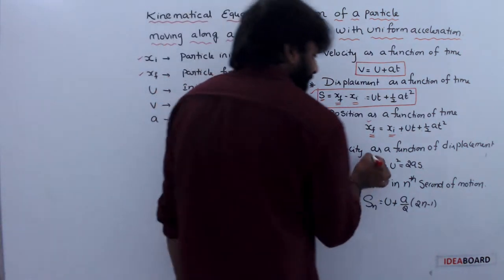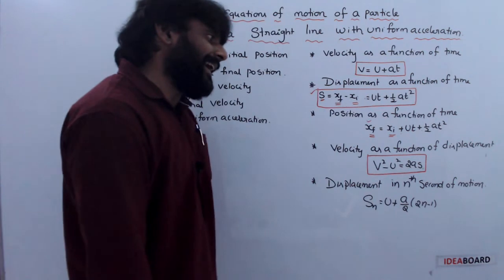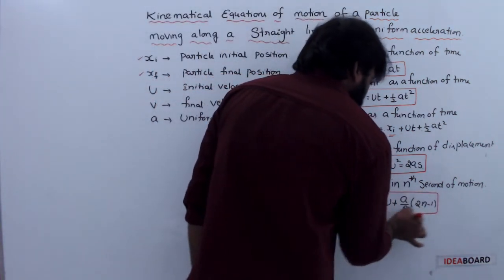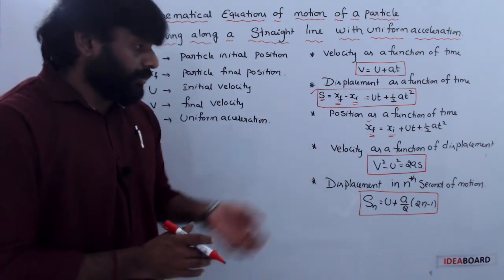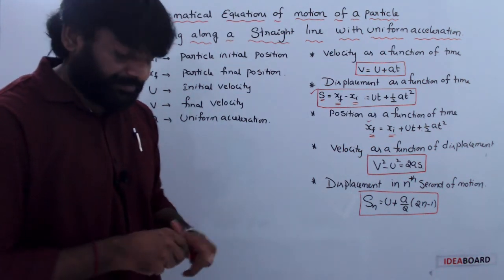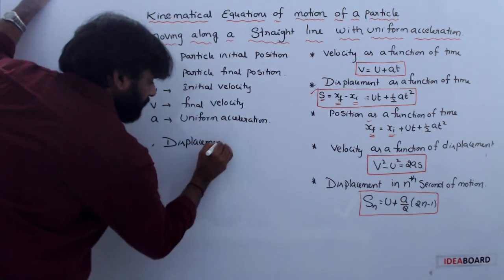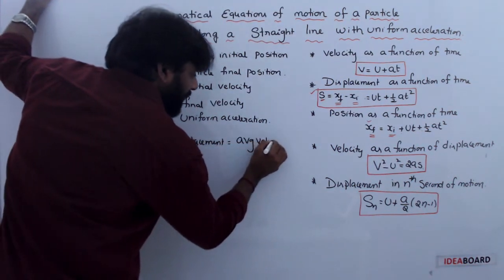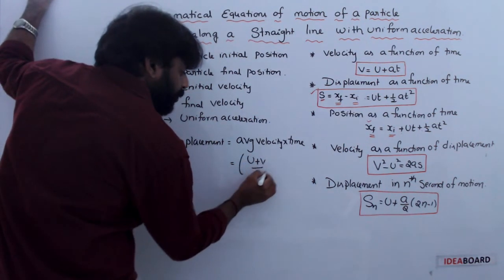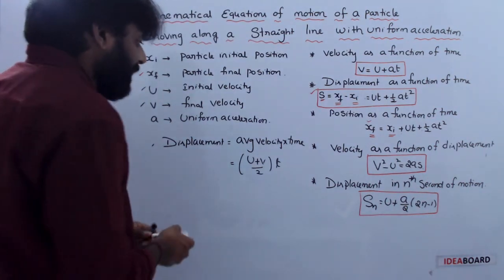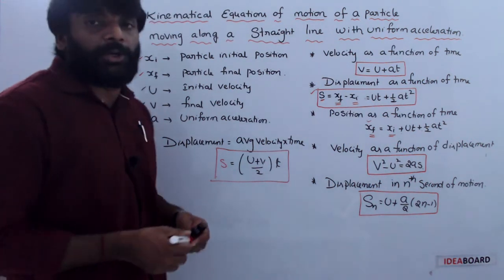Velocity as a function of displacement: v square minus u square equals 2as. Displacement in the nth second of motion: Sn equals u plus a by 2 into 2n minus 1. Displacement is also written as average velocity into time, where average velocity is u plus v by 2, so s equals u plus v by 2 into t.